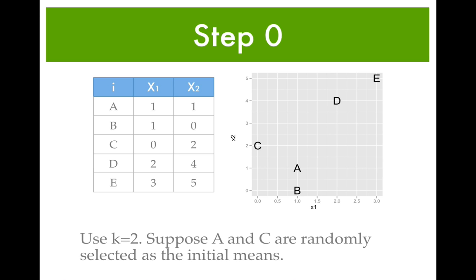The next step is to seed the algorithm, or start the algorithm, with some initial cluster means. We're going to choose observation A and observation C as the two cluster means. So A will be the mean for cluster 1, and C will be the mean for cluster 2, just to start the algorithm. There's no real reason to choose these two — we randomly select two points to form the initial means.